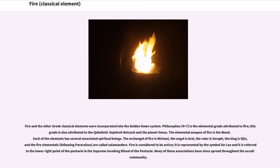The elemental weapon of fire is the wand. Each of the elements has several associated spiritual beings. The archangel of fire is Michael, the angel is Aral, the ruler is Seraph, the king is Djinn, and the fire elementals, following Paracelsus, are called salamanders.